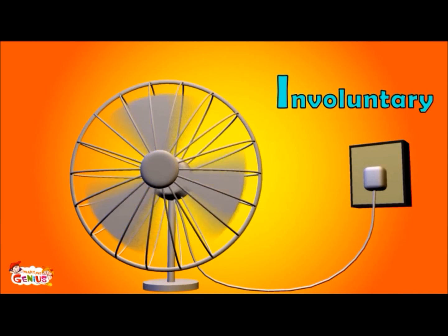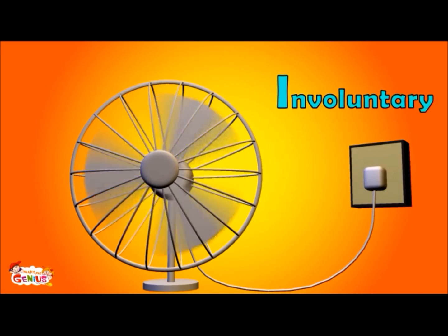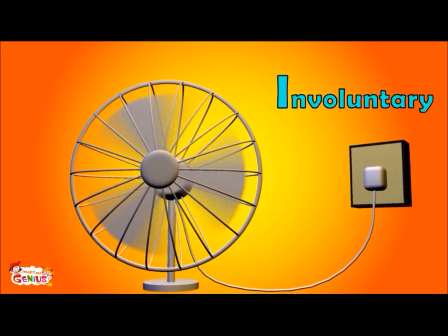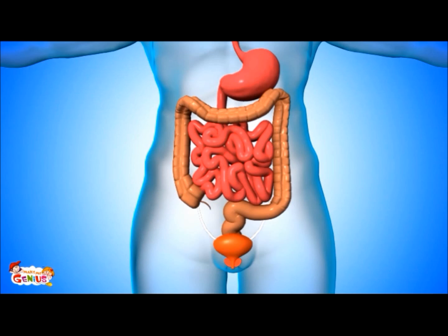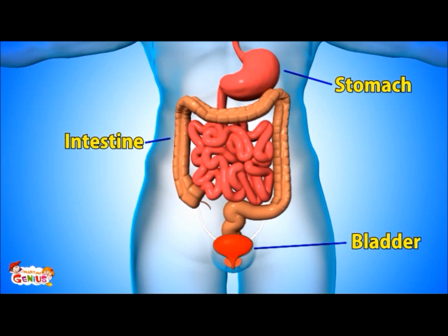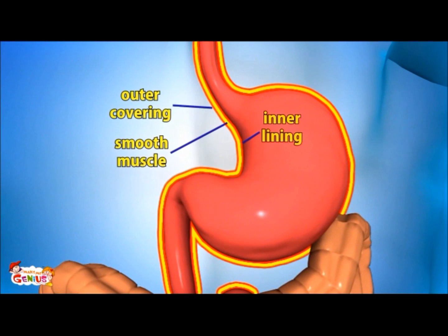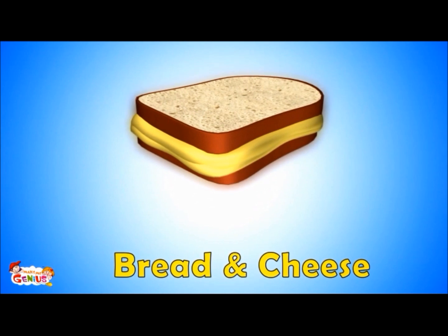See this fan — it started working without pressing the button, that's an involuntary action. Smooth muscles also work without any action from your side. Smooth muscles are found in our intestines, stomach, bladder, and other organs.